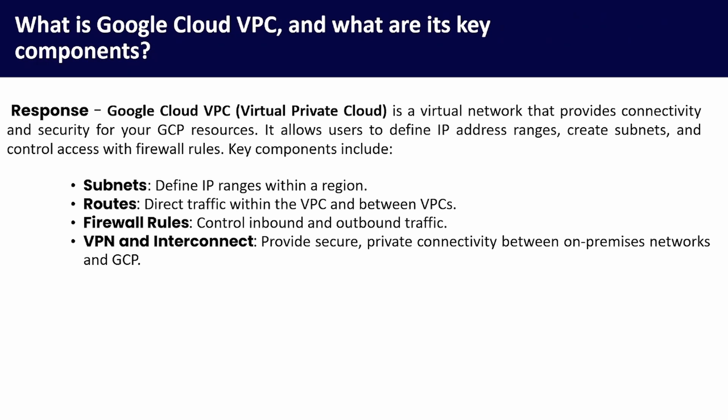What is Google Cloud VPC and what are its key components? Google Cloud VPC (Virtual Private Cloud) is a virtual network that provides connectivity and security for your GCP resources. It allows users to define IP address ranges, create subnets, and control access with firewall rules.